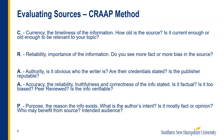Let's talk about the CRAAP method. This method is something you will hear about a few times as you go through your general education courses. CRAAP is an acronym designed to help you evaluate a source. The C stands for currency — the timeliness of the information. How old is the source? Is it current enough or old enough to be relevant to your topic? R is for reliability — the importance of the information. Do you see more fact or bias in the source? A is for authority — is it obvious who the writer is? Are their credentials stated? Is the publisher reputable?